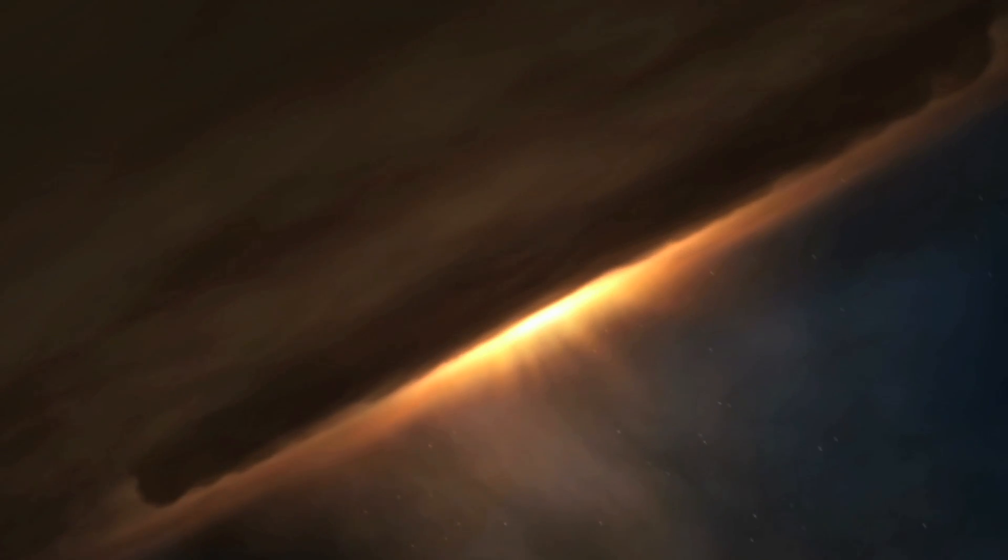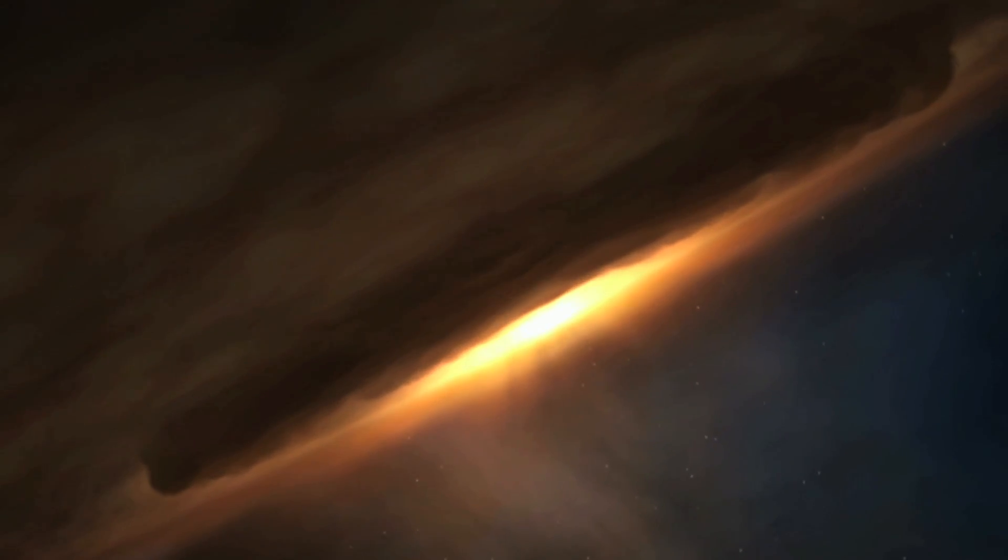Messier 106 has a supermassive black hole at its center. Although this is true for most galaxies, this black hole is particularly active and hungry, gobbling up nearby material at a startling rate.